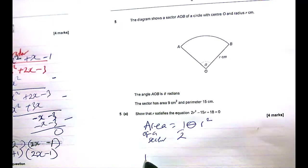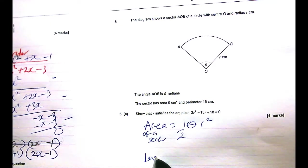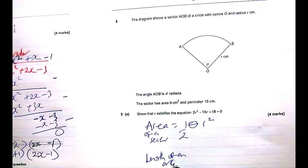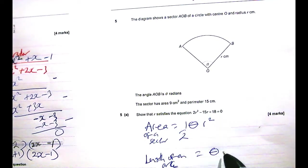Perimeter, length of an arc rather, is just θR.